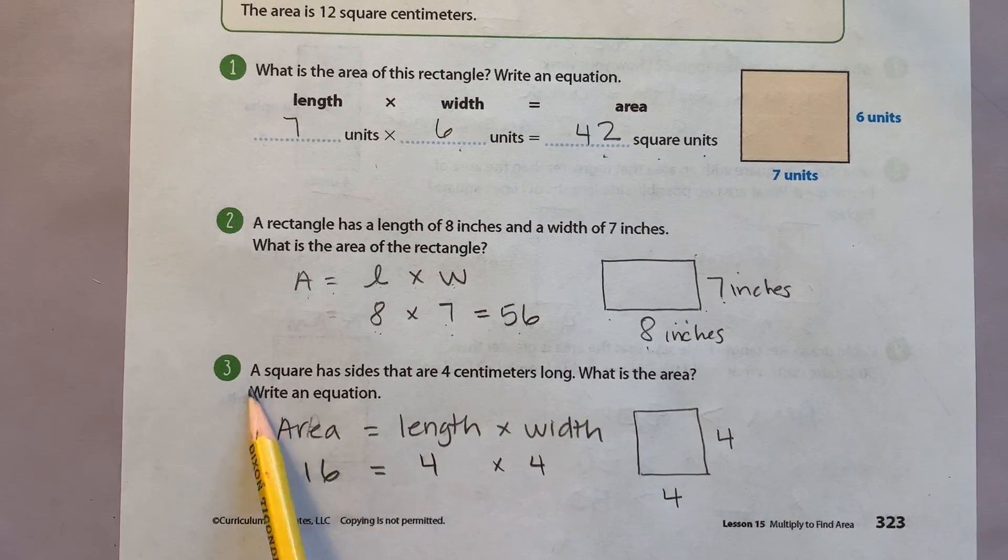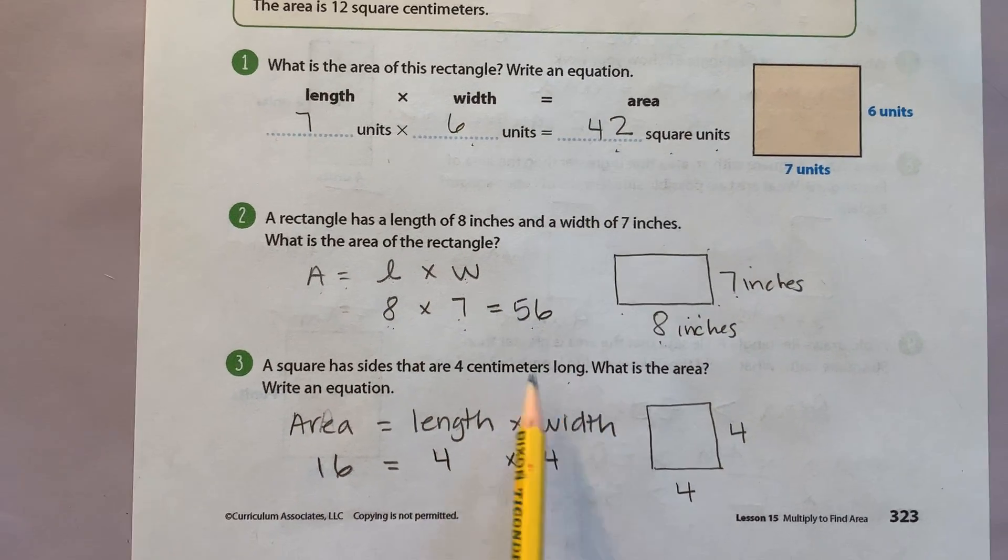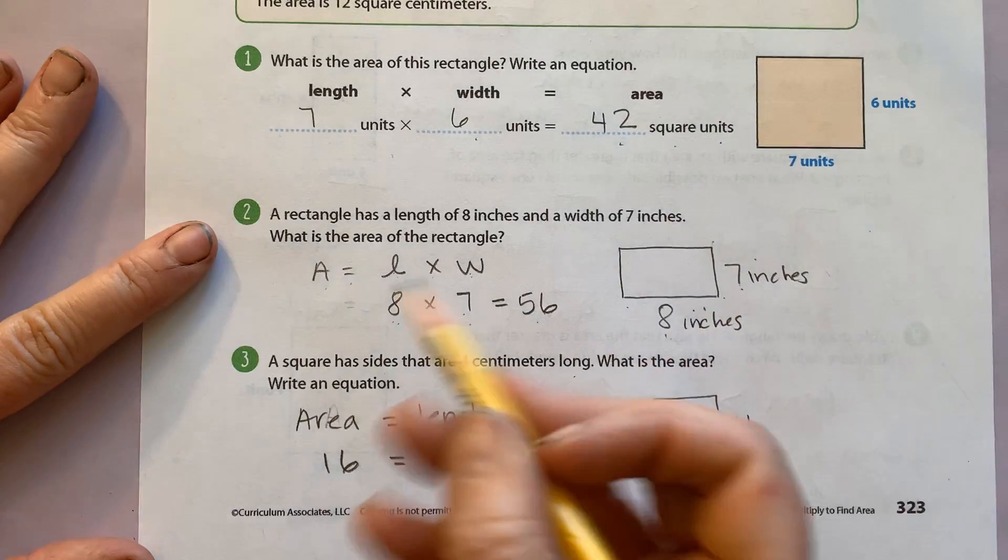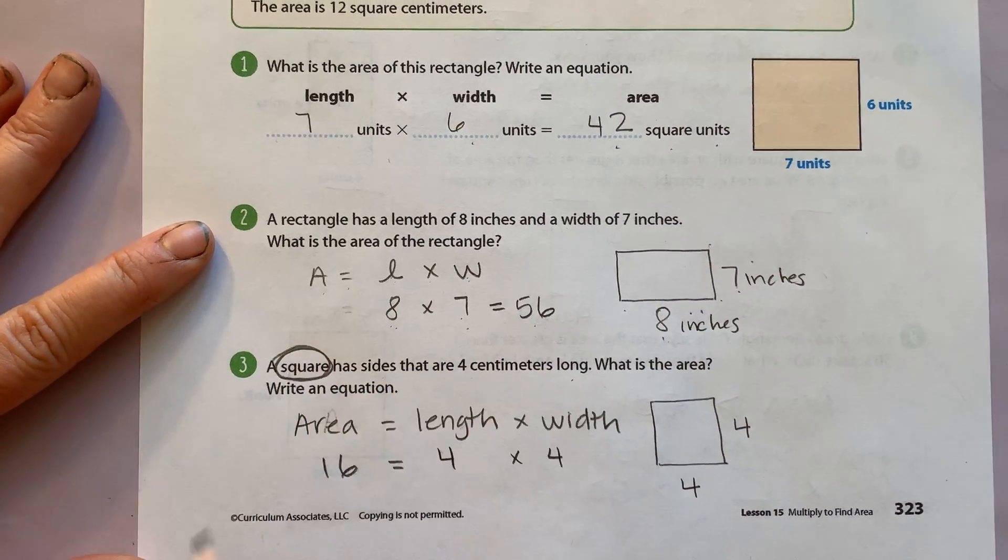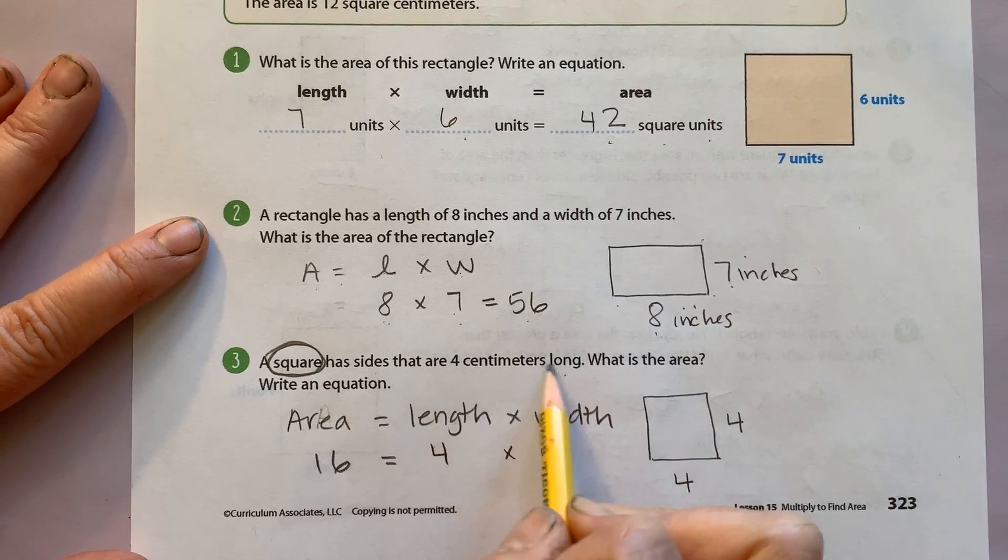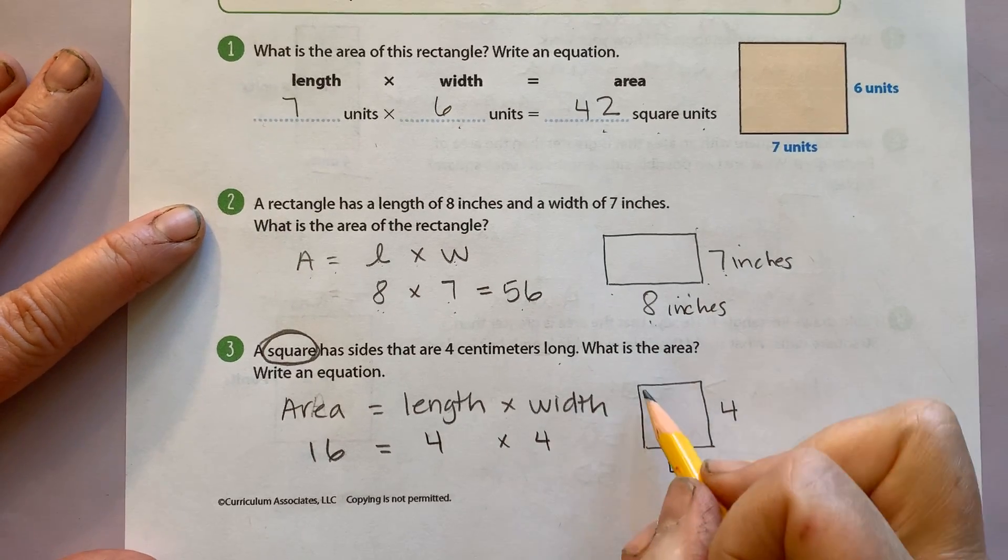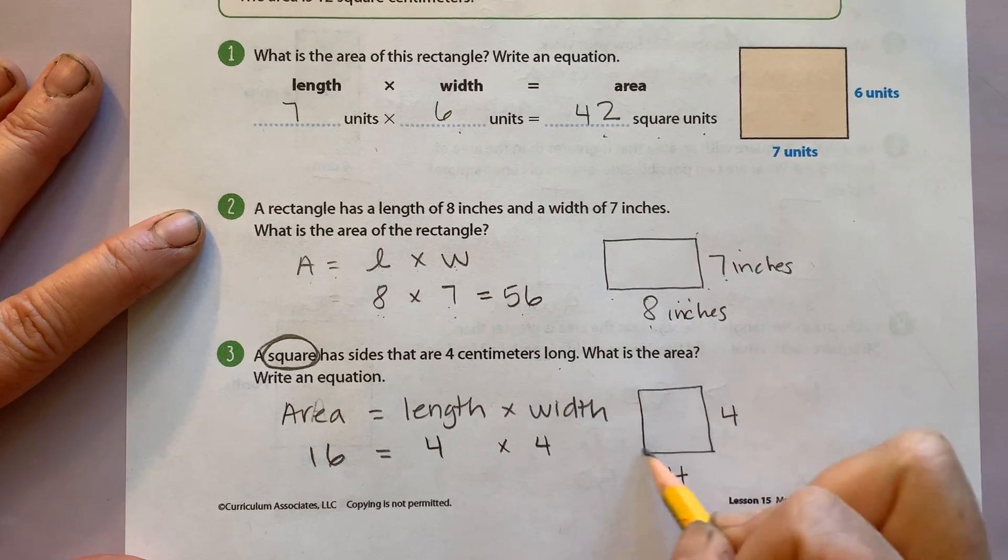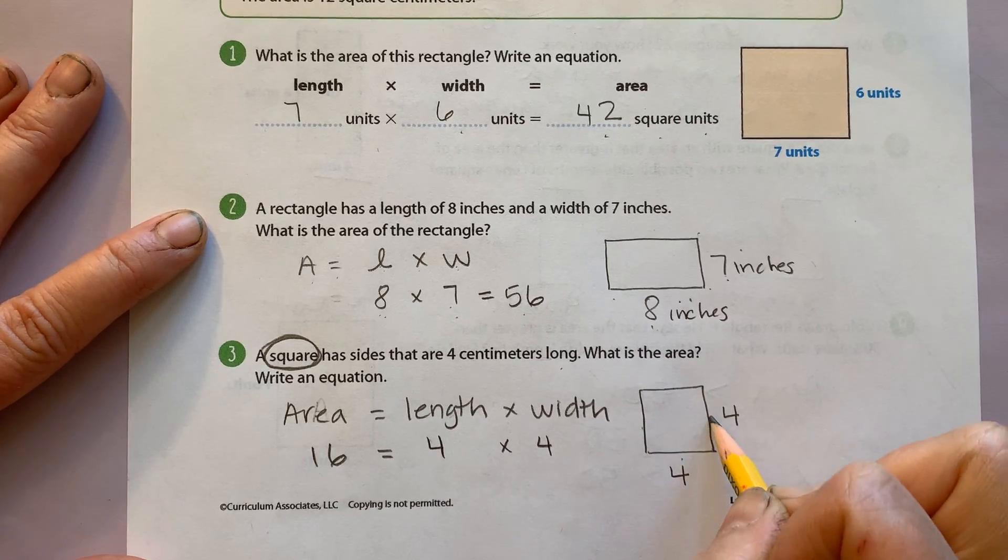Number 3, a square has sides that are 4 centimeters long. As I was doing this one, I had to remind myself what a square is and what I know about a square because I noticed that they only gave me the length of my square. Fortunately, I remembered. I drew a picture. And I remembered that a square has all sides the same.